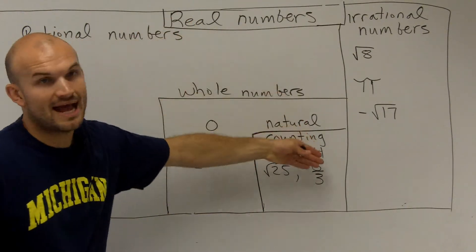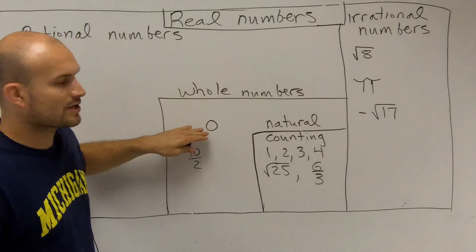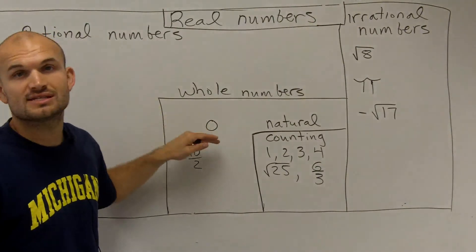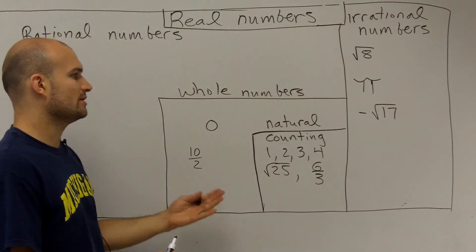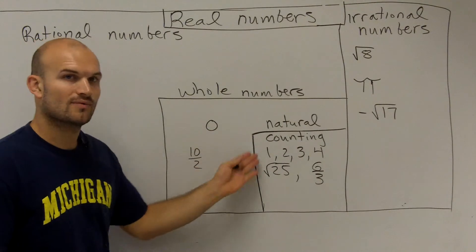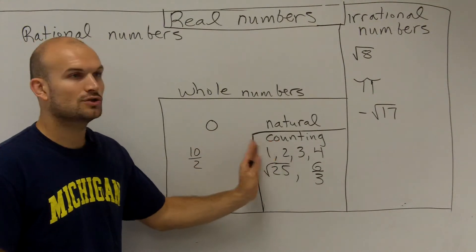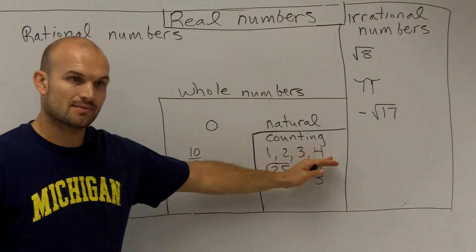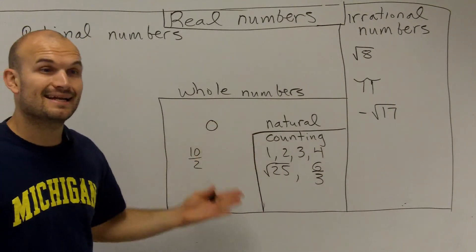The only difference between whole numbers and natural or counting numbers is we're going to add the number zero. And we don't really count zero. That's why we don't include zero in the counting numbers or the natural numbers. However, it is a whole number.